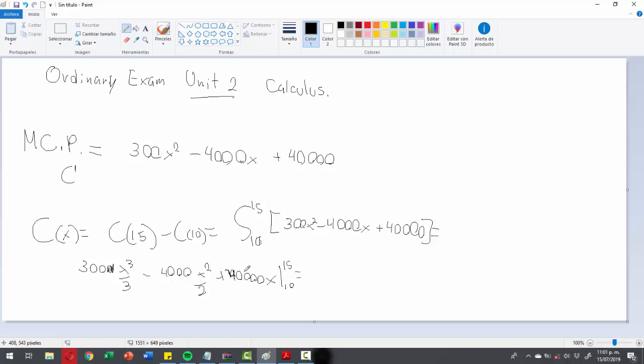Which is equal to 100x cubed minus 2000x squared plus 40,000x from 10 to 15.